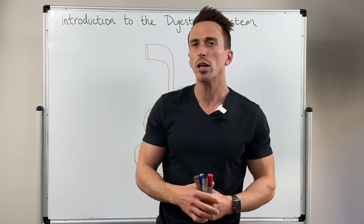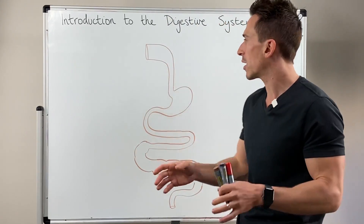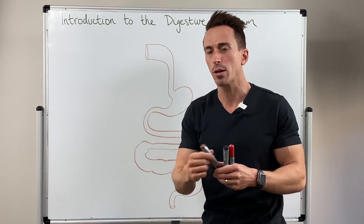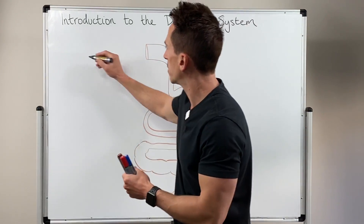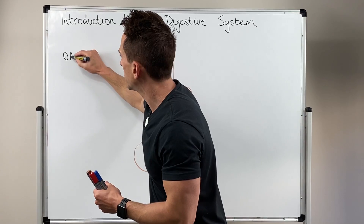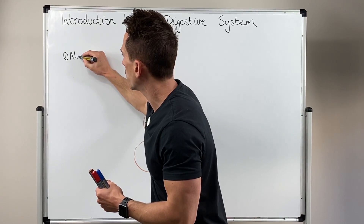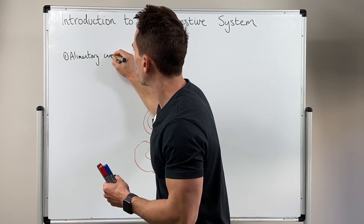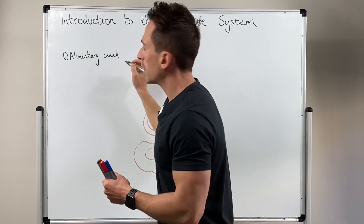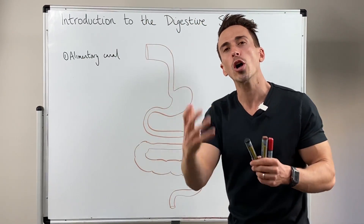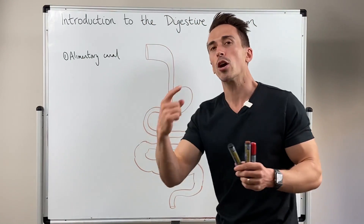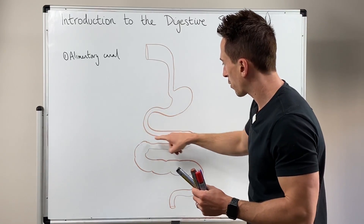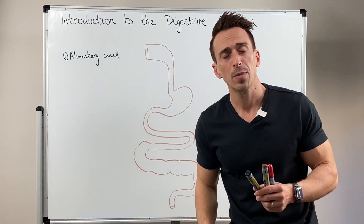Now when I say digestive tract I'm also referring to that of the alimentary canal, and that's the primary component of the digestive system. The alimentary canal is this hollow muscular tube that goes from the mouth and snakes its way all the way through down to the anus.